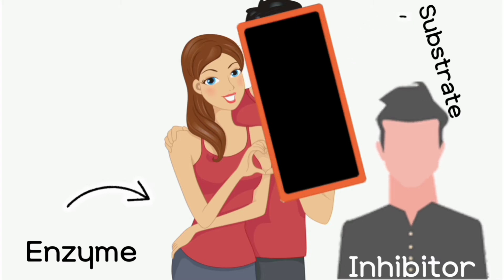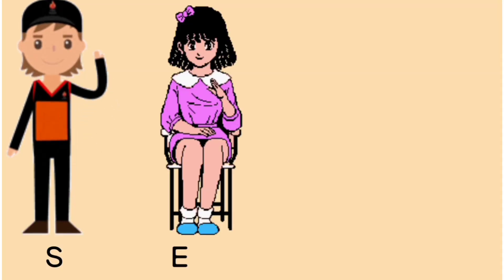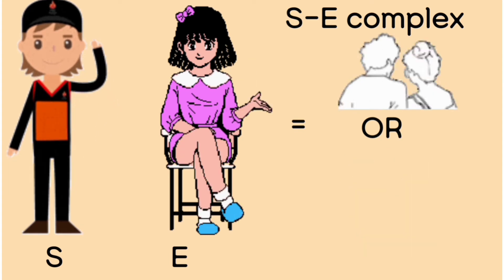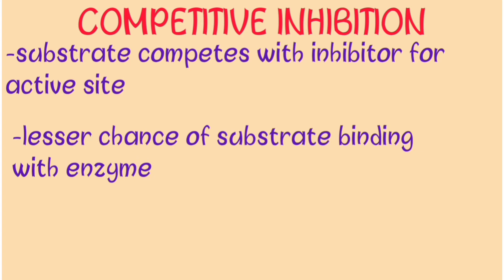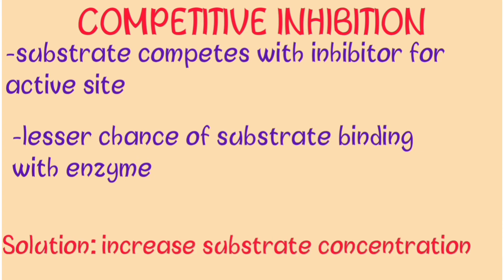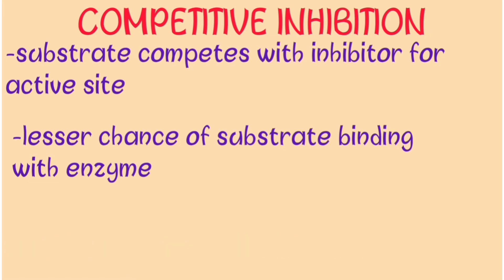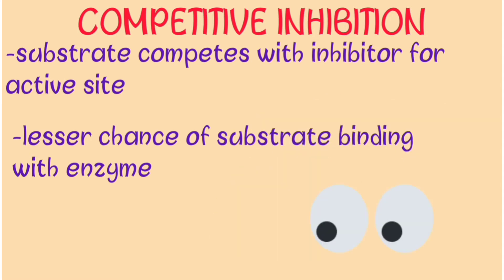That is exactly how competitive inhibitors work — they bind to the enzyme instead of the substrate. The substrate, like the first guy, decides to try his luck elsewhere and might either win or lose. He now has about a one-in-two chance. An easy way to counter this would be by increasing substrate concentration, which increases substrate affinity for the enzyme.